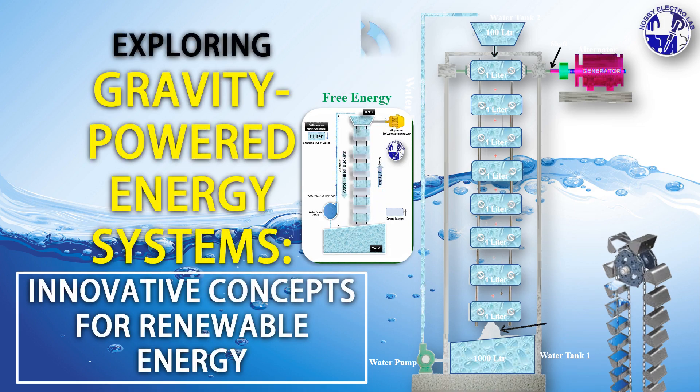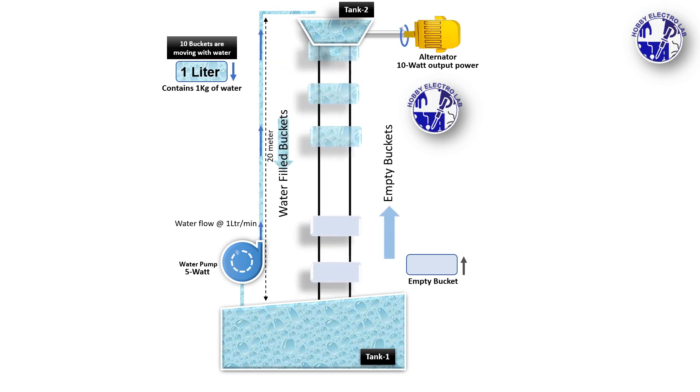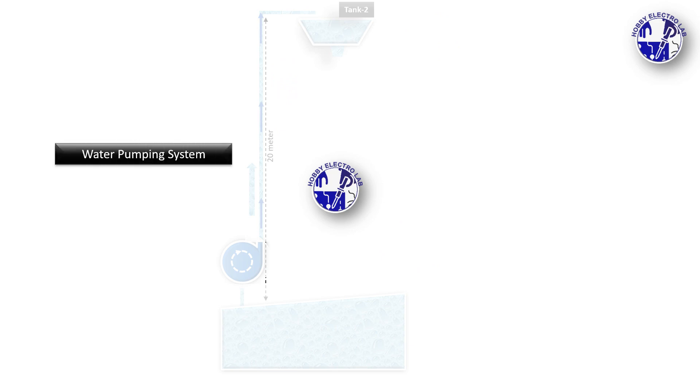This video explains a mechanical energy generation system that powers a generator using water flow, gravity, and weighted buckets, ultimately producing usable energy. Here's a detailed explanation.